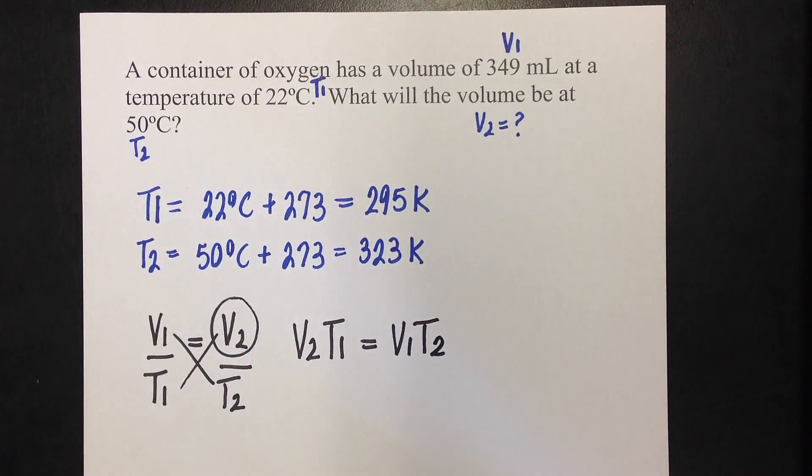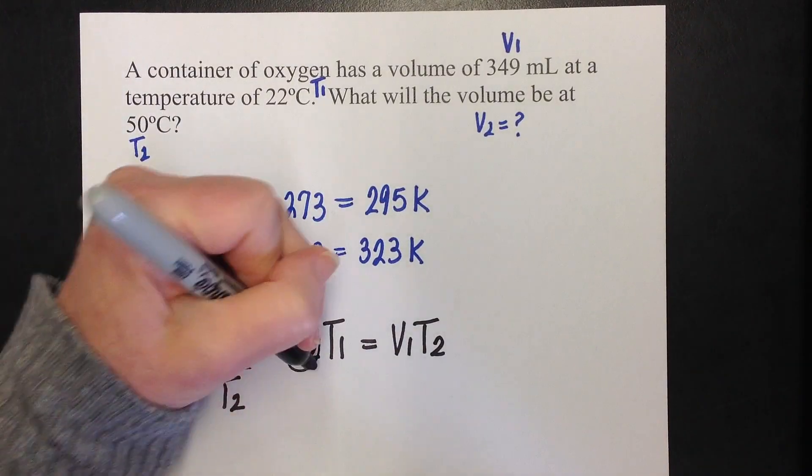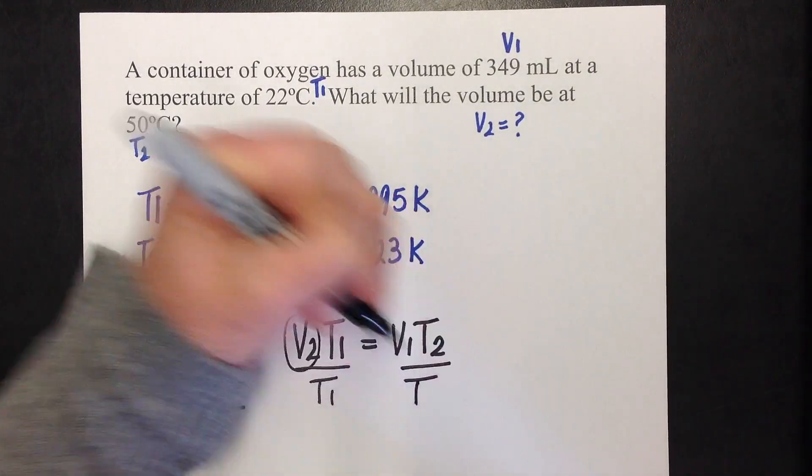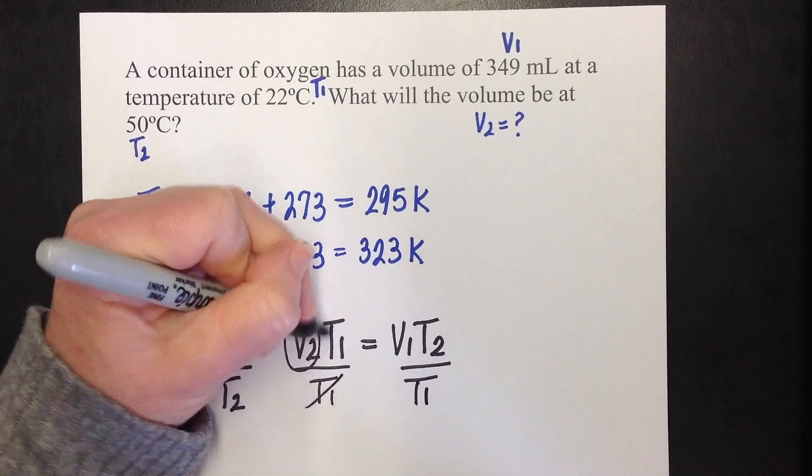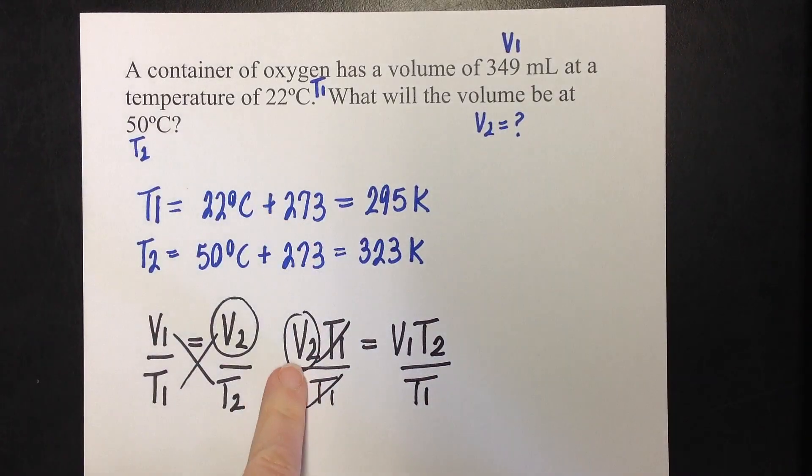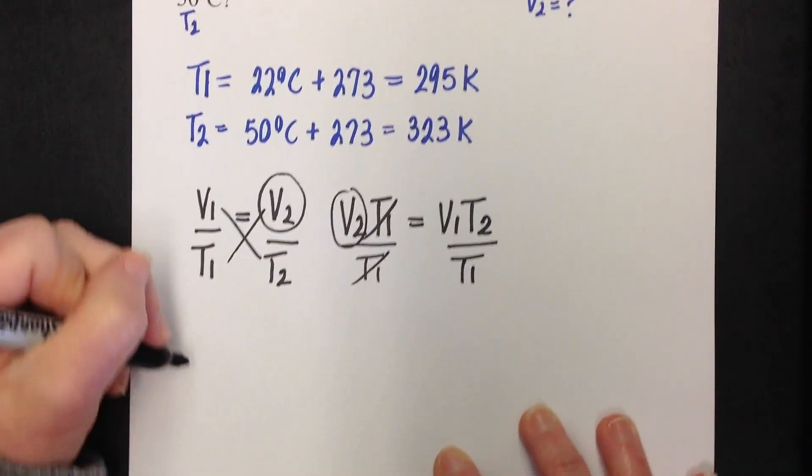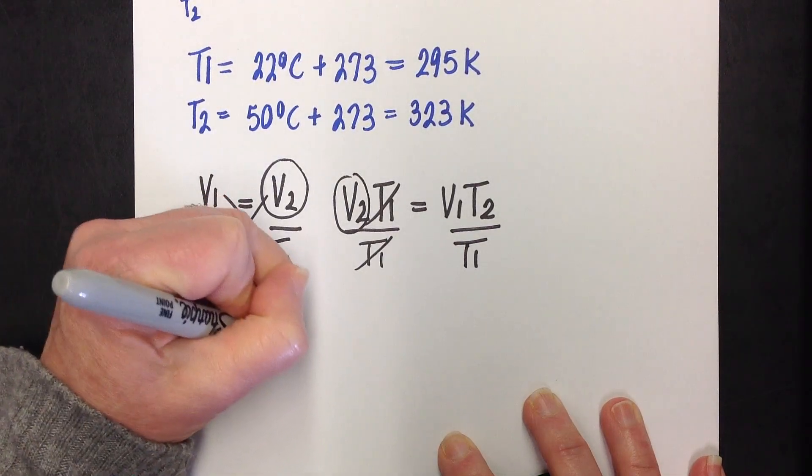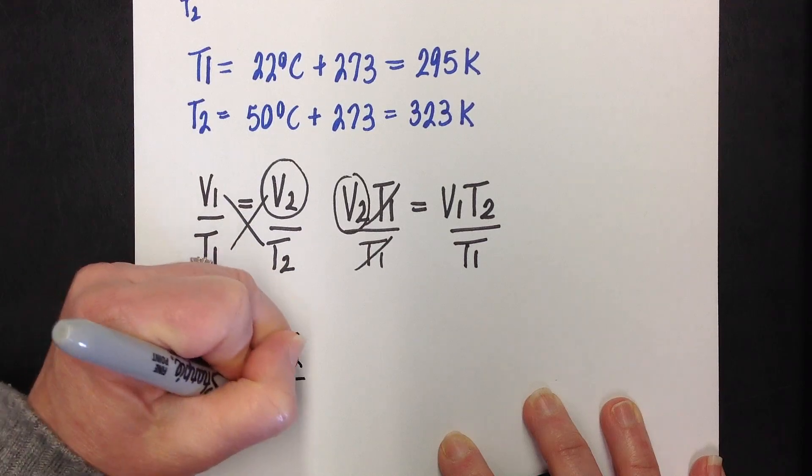Again, I'm still trying to isolate V2, so I'm going to divide both sides by T1. T1's cancel, and I get V2 equals V1 times T2 over T1.